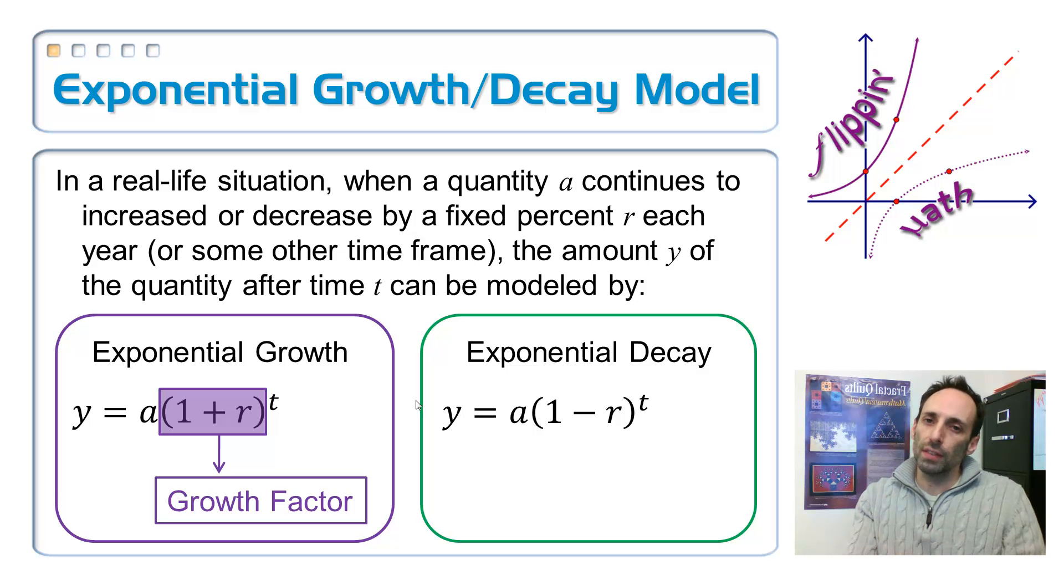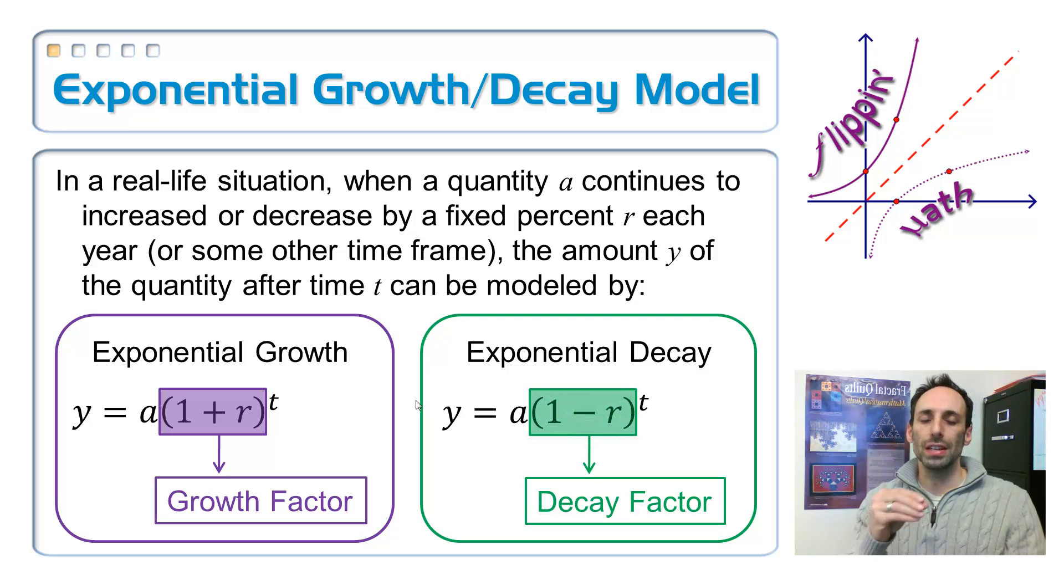R is a percent. It's given to you as a percent, but you write it as a decimal. Over here on the green side, if it's a decay function, it's getting smaller and smaller. That thing in parentheses, 1 minus R, that's your decay factor. That number is always going to be between 0 and 1, so it's going to get smaller and smaller.